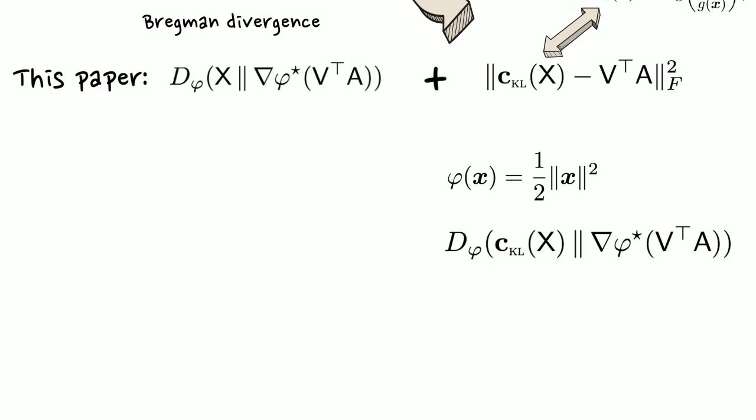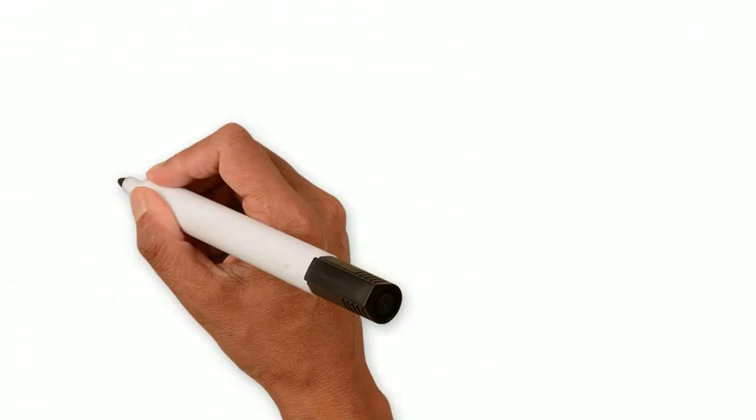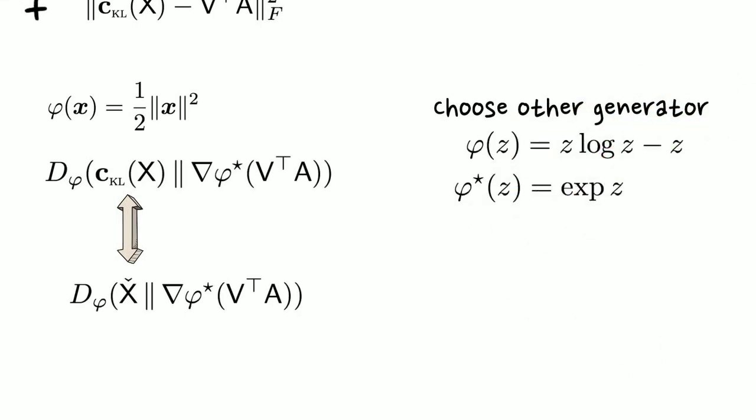Our main result shows an equivalence between the CLR transformed data and the original normalized data. Before we describe our theoretical contribution, let's see what happens when we choose a different generator. For example, the one that results in the Kullback-Leibler divergence.